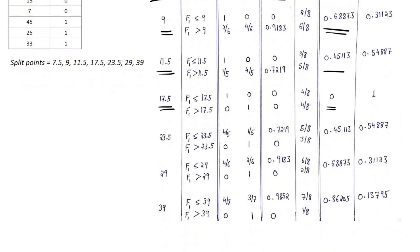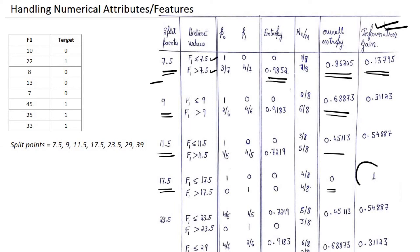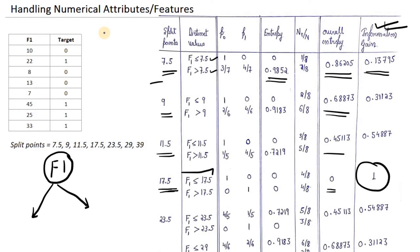Looking at the information gain column, we find the maximum information gain, which corresponds to the split point 17.5. The decision tree formulation looks like this: we consider F1 as the root node (since we have only one attribute). The decision is based on two branches — F1 less than or equal to 17.5, or F1 greater than 17.5. If F1 ≤ 17.5, the predicted value is 0; if F1 > 17.5, the predicted value is 1. Looking at the data, we can clearly see this holds: all values with F1 ≤ 17.5 have target 0, and all values with F1 > 17.5 have target 1.